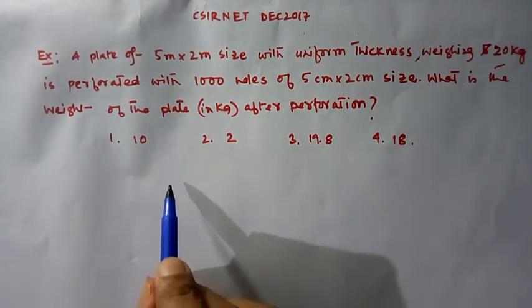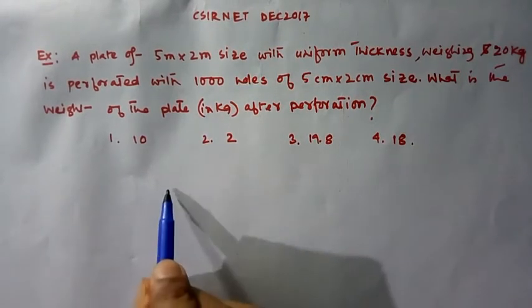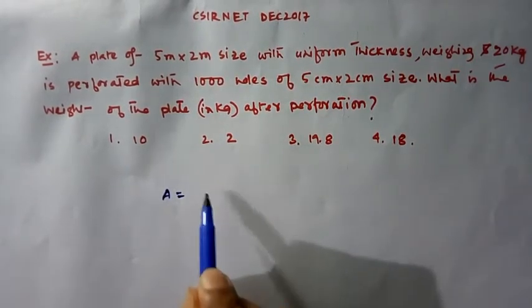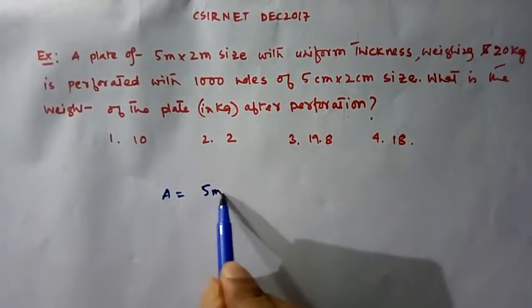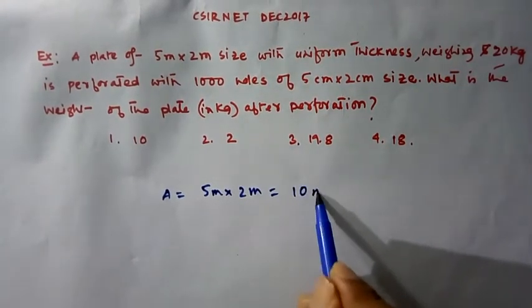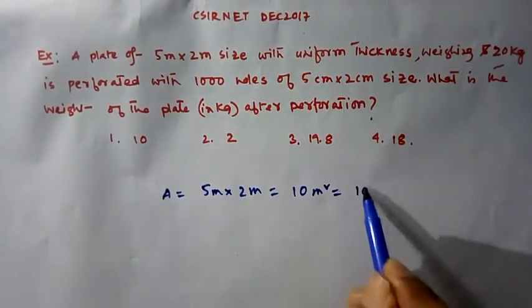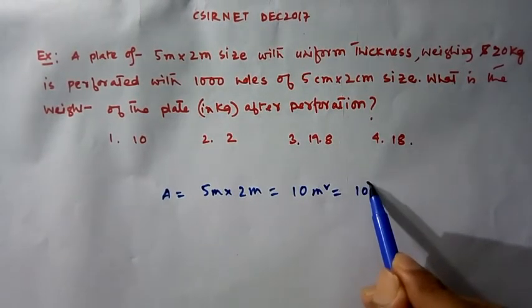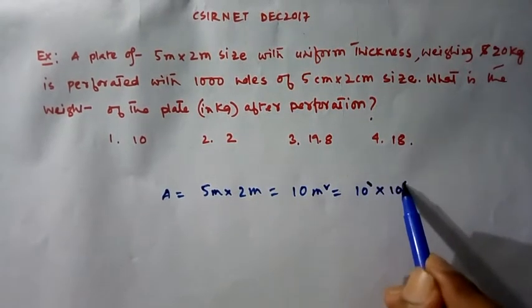The total weight of the plate will be... First, we are supposed to find out the area of the plate. Area equals 5m x 2m equals 10m² which is 10 x 10⁴cm², approximately 10⁵cm².